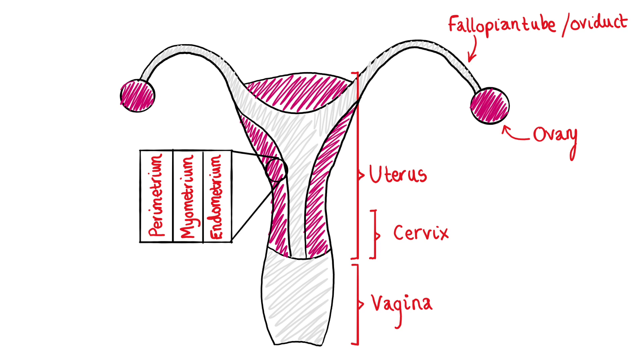The myometrium, that middle muscular layer, is responsible for undergoing contractions that lead to childbirth. It's also responsible for contractions — milder ones — that help in the release of blood during your period. That is the reason why a lot of people get abdominal cramps during and around their period.